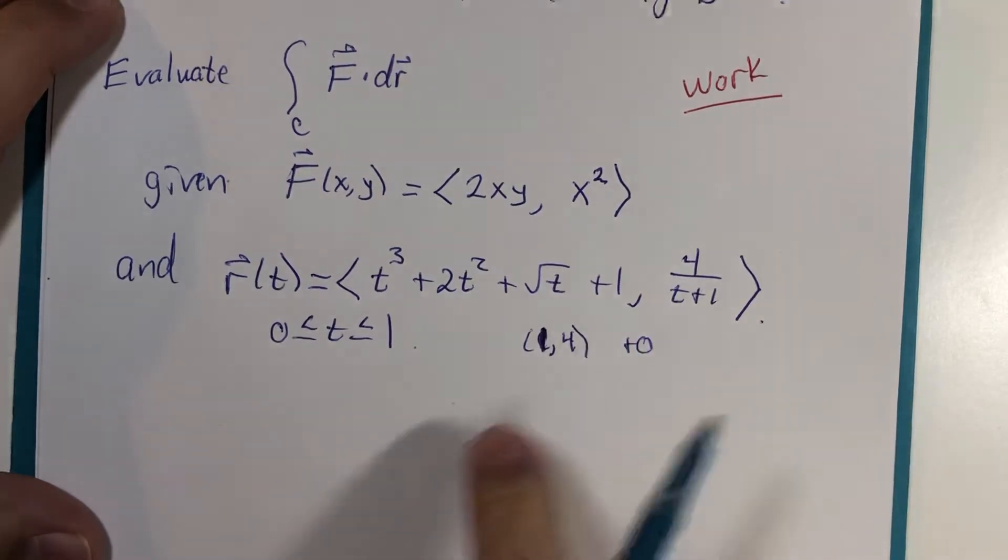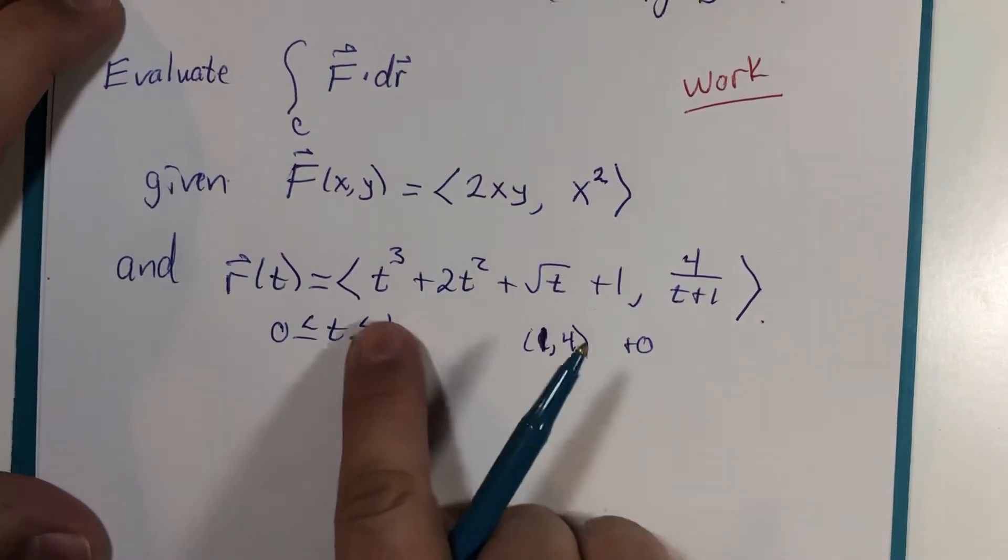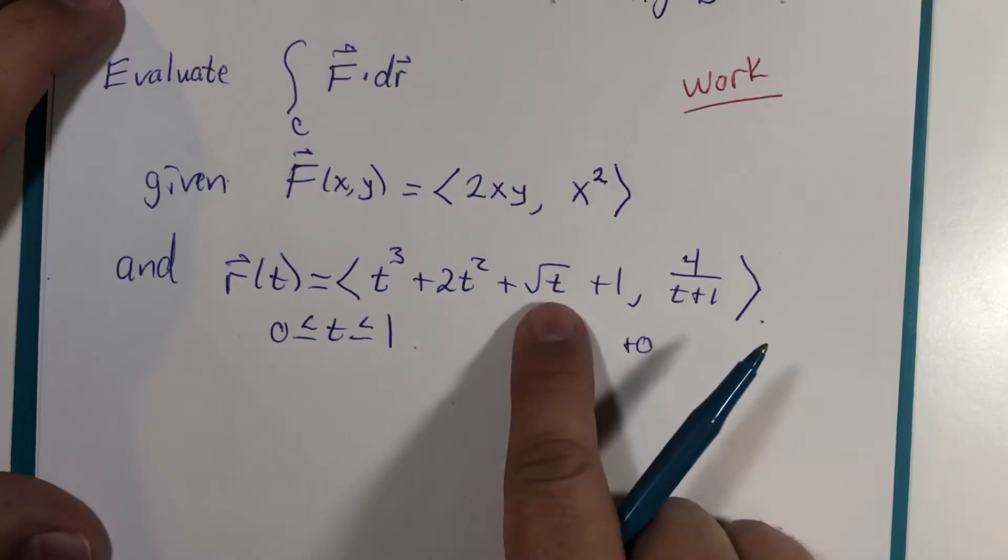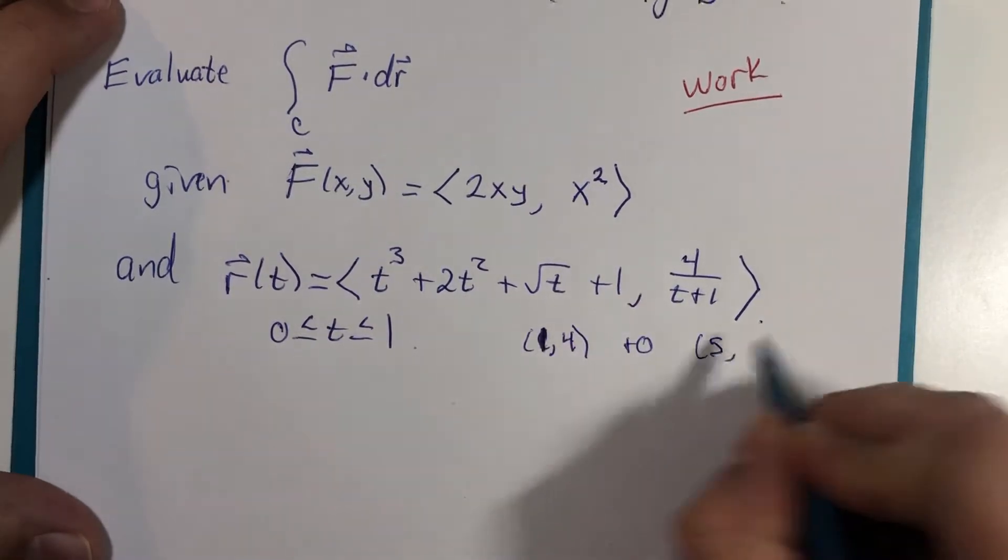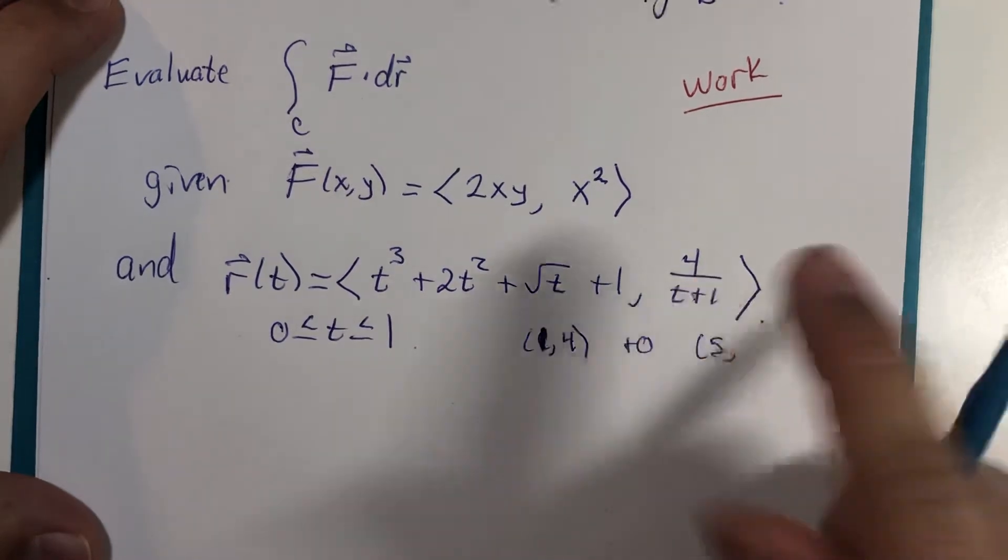And if t is 1, 1 plus 2 plus 1 plus 1, that's 5. And 1 plus 1 is 2, 4 over 2 is 2.